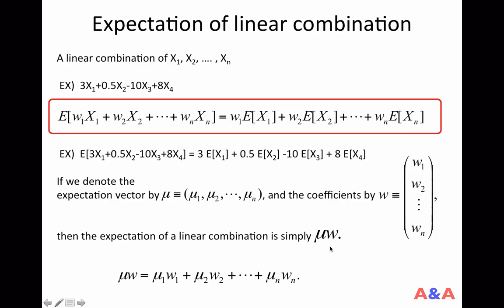If you forgot what the inner product of two vectors is: the inner product is simply the sum of the products of corresponding components — μ1·w1, μ2·w2, and so on — then summed up. That's the inner product of two vectors. So this formula tells you that the expectation of a linear combination of random variables is simply μ·w.